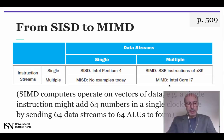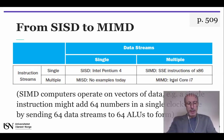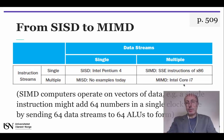On the other hand, a conventional multiprocessor has multiple instruction streams and multiple data streams. That's the MIMD case on the bottom right, of which the Intel Core i7 is an example.